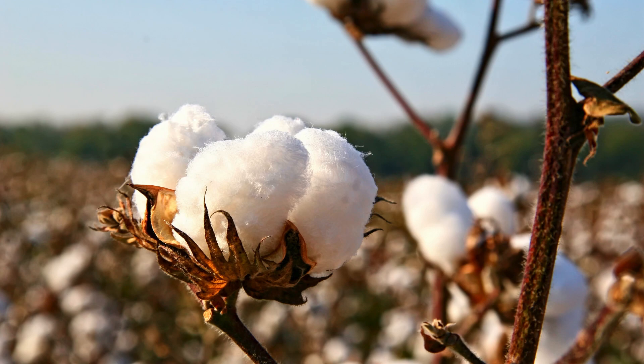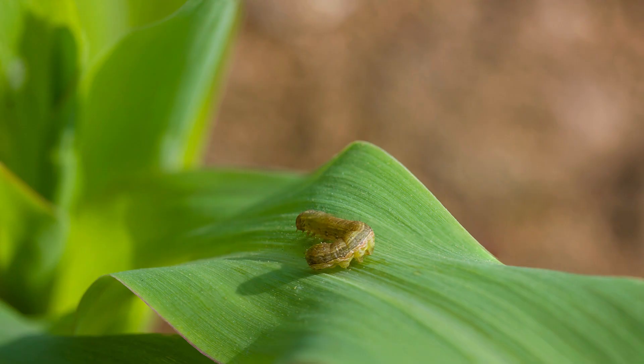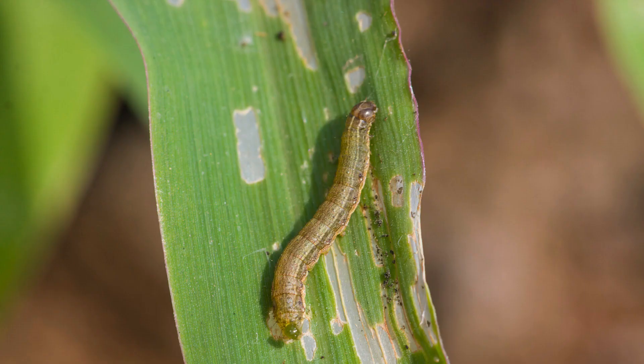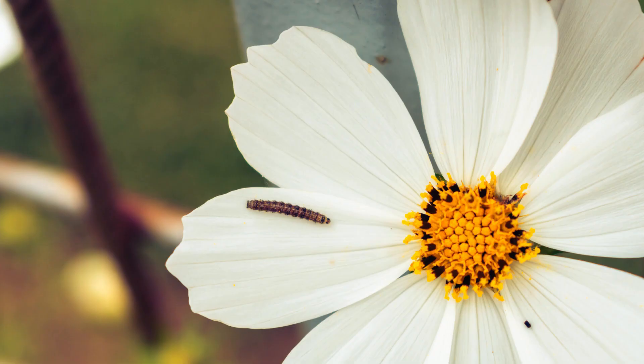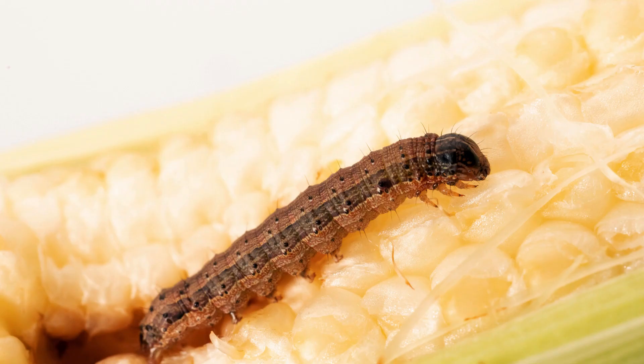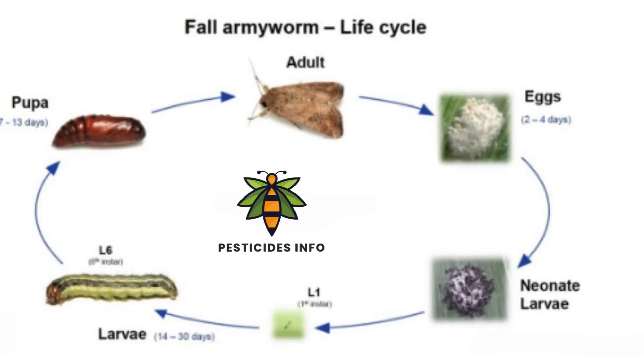Armyworms are typically green, brown, or black in color with distinct stripes along their bodies. They can range in size from a few millimeters to several centimeters in length. They often move in groups, marching across fields and causing widespread damage.